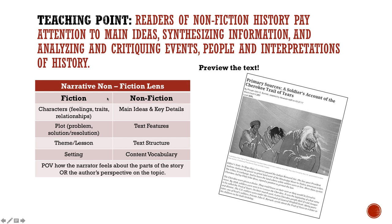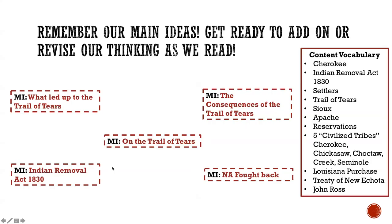Because this is a narrative nonfiction text — somebody's account, their story — we're going to use our narrative nonfiction lens. Remind ourselves: the narrative nonfiction lens means we think about both the fiction and the nonfiction sides. On the fiction side, we pay attention to character feelings, traits, relationships, plot, problem, solution, theme, and setting. On the nonfiction side, we look at main ideas, key details, text features, text structure, content vocabulary, and point of view.